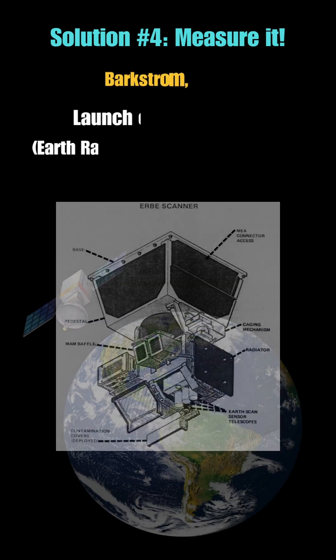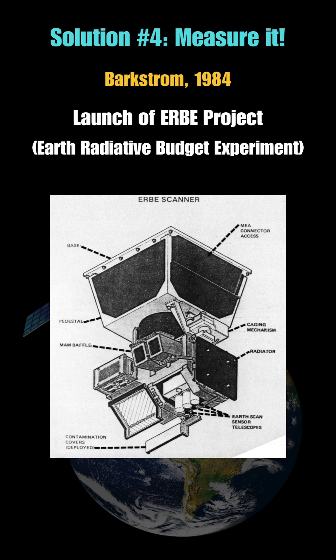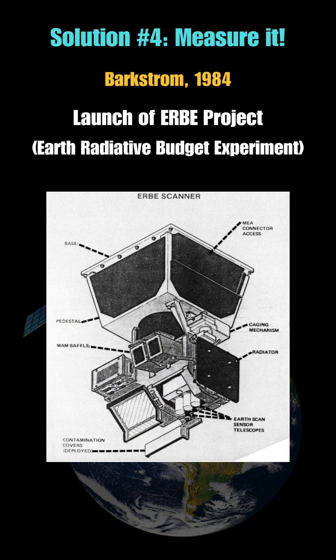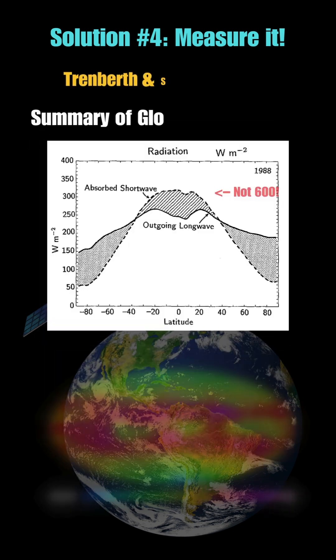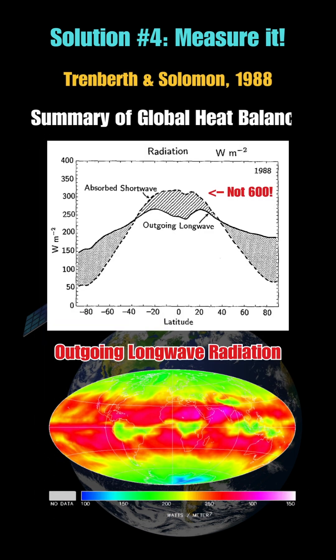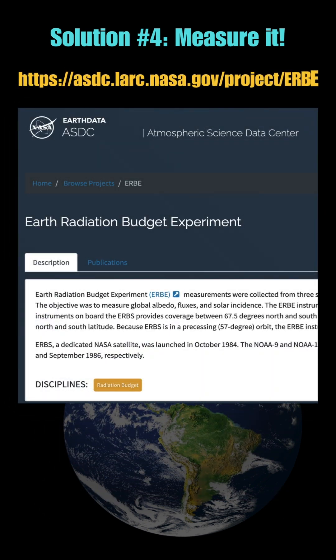Due to high error, this led to the launch of the ERBS satellites to improve precision and coverage. By 1988, we had a clear map of Earth's radiated budget that substantiated climate models. Those data are public, by the way, at the link above.